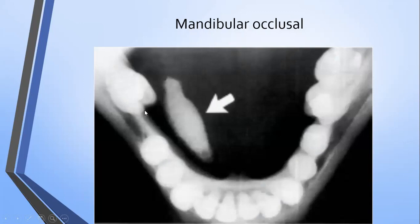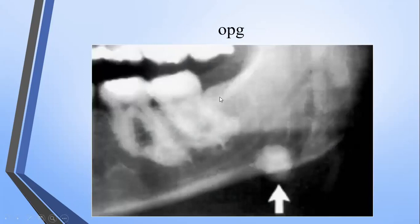In this picture of a mandibular or periapical radiograph, near the second molar region where the first molar is missing, you can see the salivary stone is present. In the OPG as well, you can see this salivary stone is present near the lingual nerve and in the ramus, near the angle of the border of the mandible.